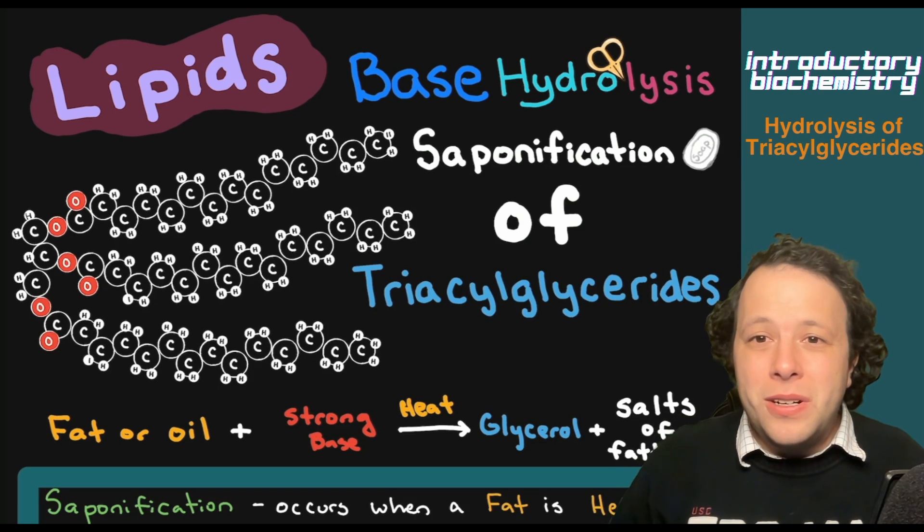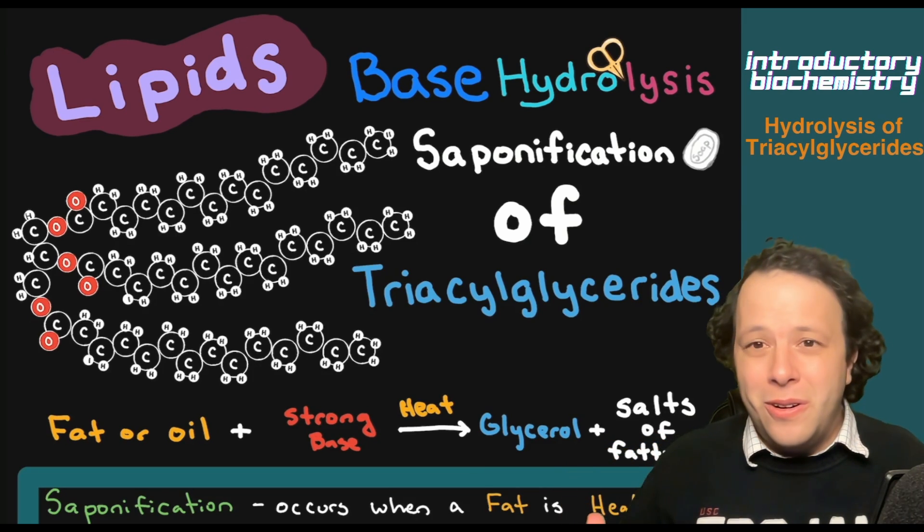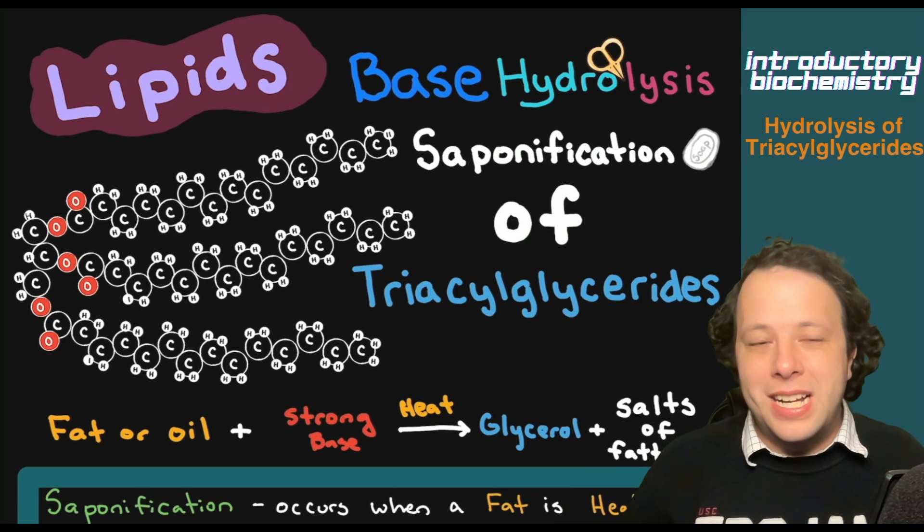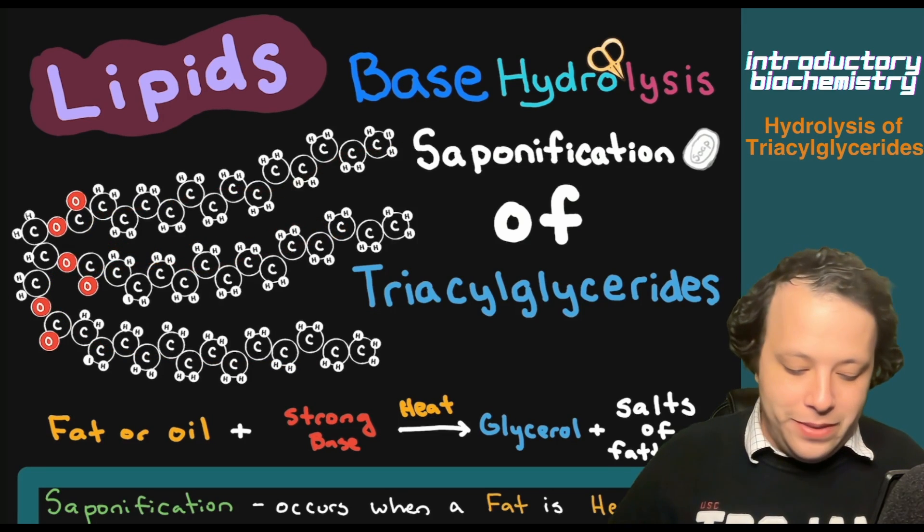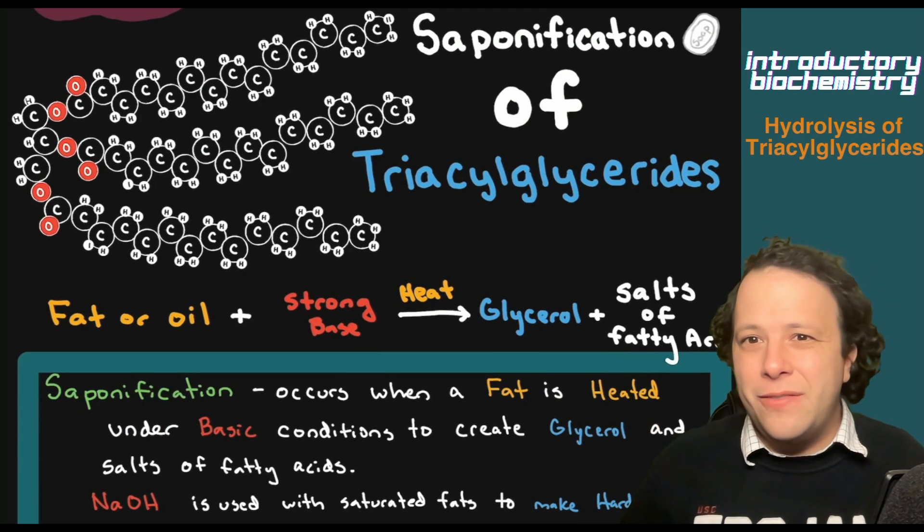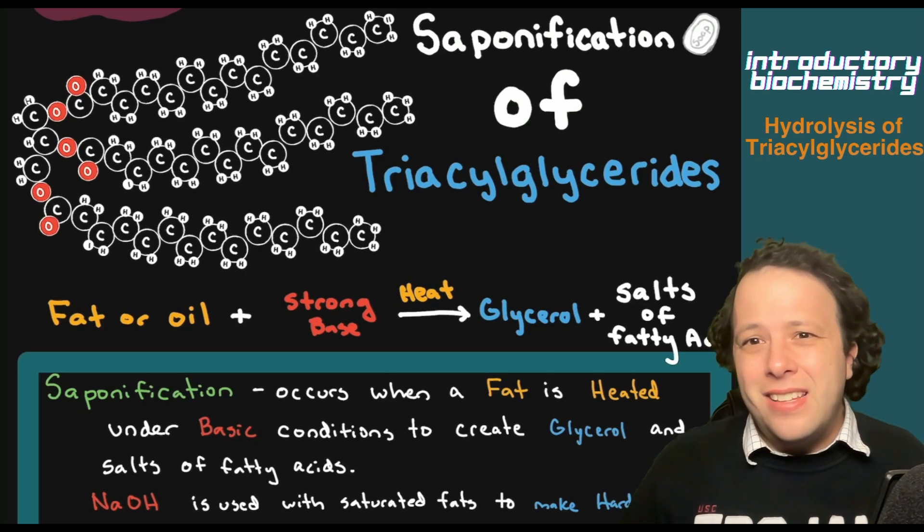So how does this work? If you have a lipid or fat from the store, from animals, or different products, you can turn it into soap. Let's say I had a triacylglycerol just like the one here. This is what we refer to as a fat or oil, like vegetable oil, butter, or different fats from meat.